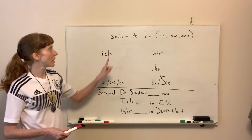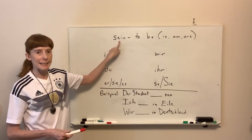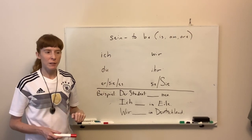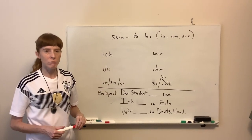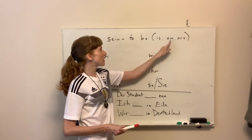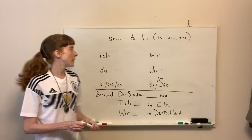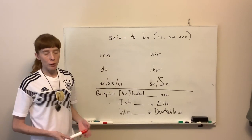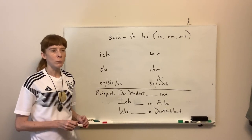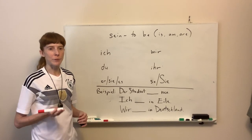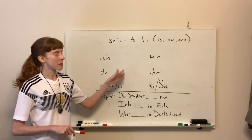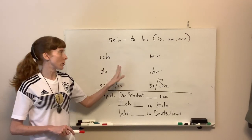Guten Tag! Today we'll be doing the verb sein, which is 'to be.' A lot of times in English we don't really think of the verb 'to be' because it's irregular — you've probably heard it as is, am, or are. It's also irregular in German, but it is one of the most important verbs. We'll actually be using it later for different tenses as well, so this is probably one of the two most important verbs in German.